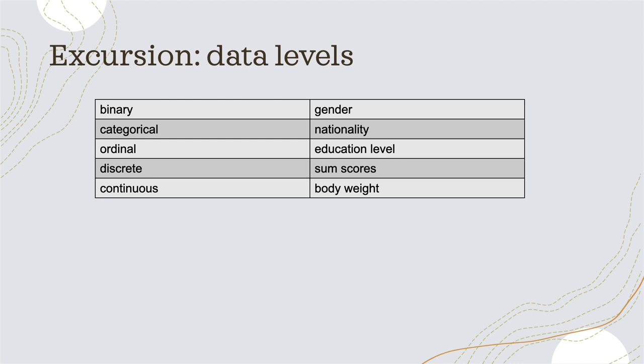These are all very equal data points. The next level is the ordinal data level. The important thing is that with ordinal data we are still talking about categories, but now we can sort them — we can order them in an ascending order, for example like education level or income.